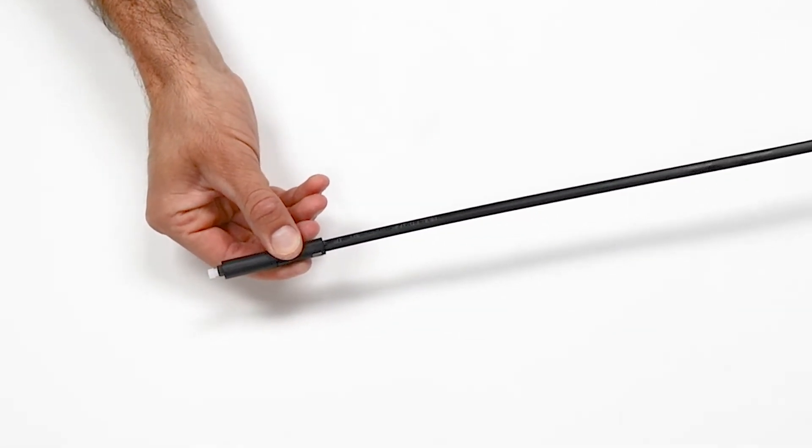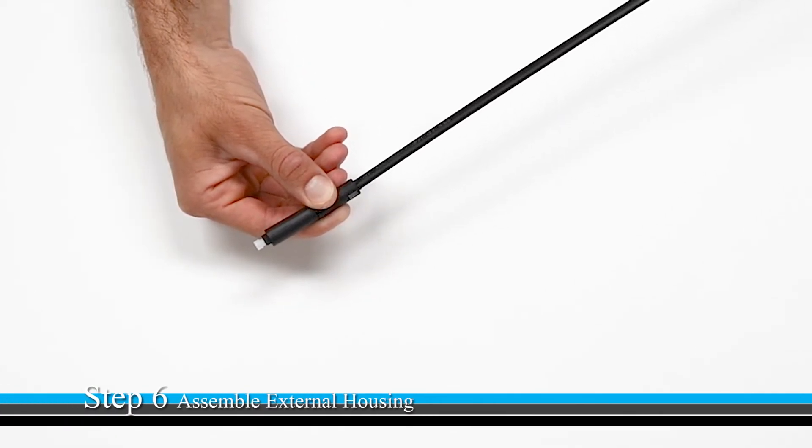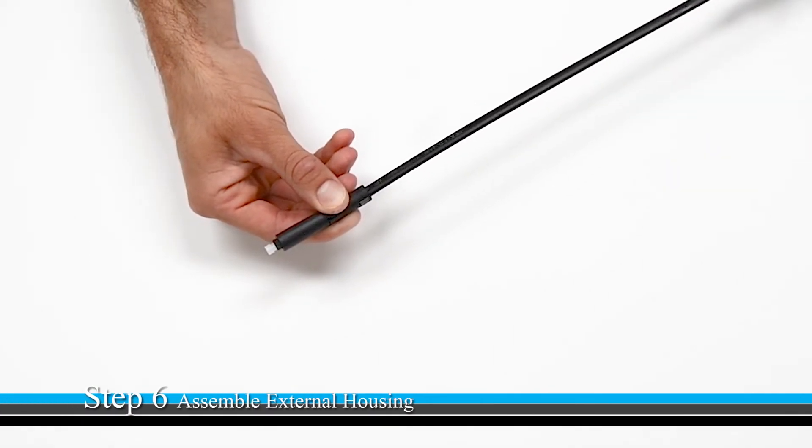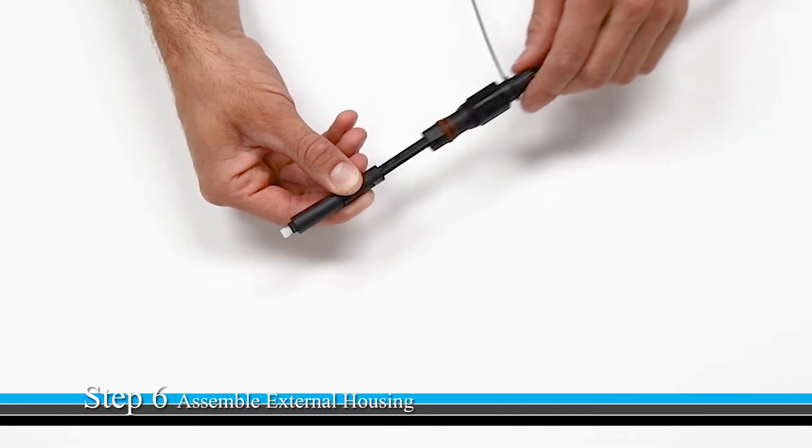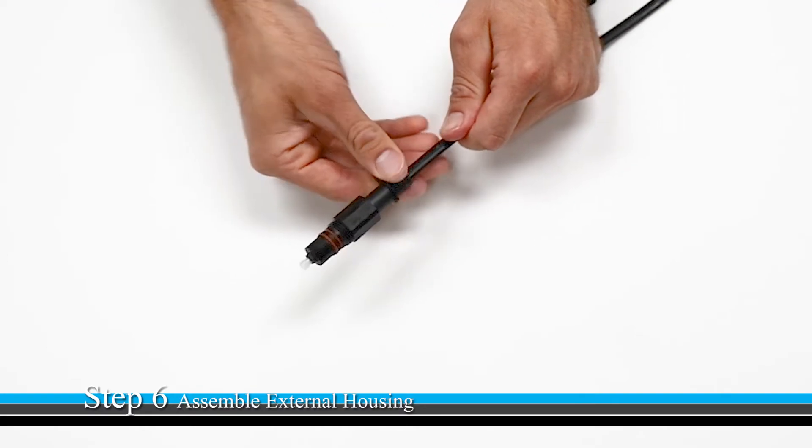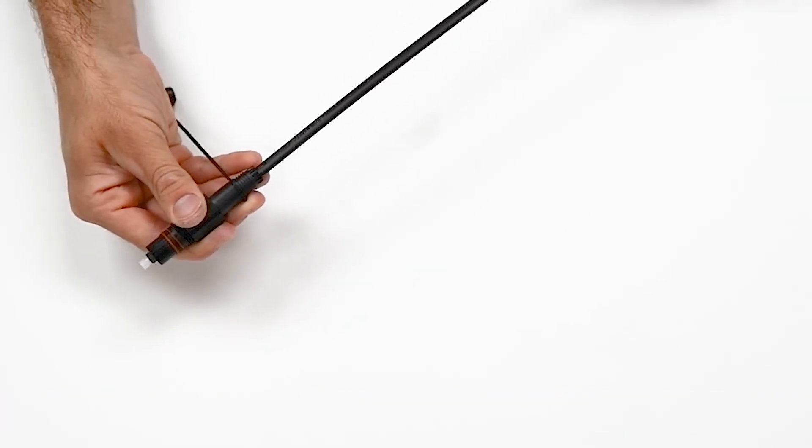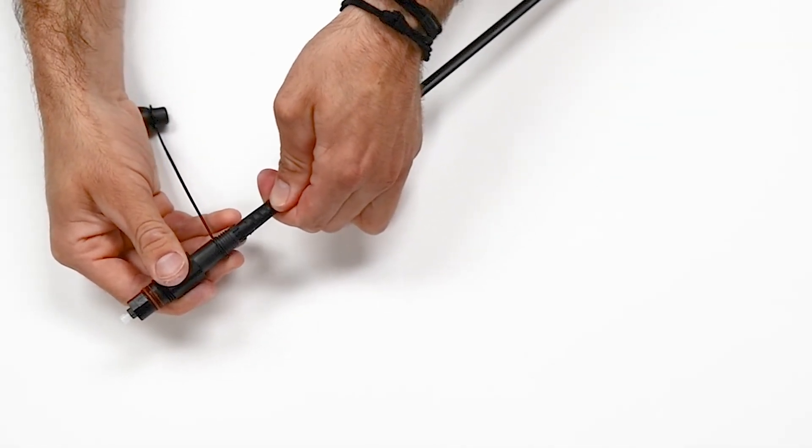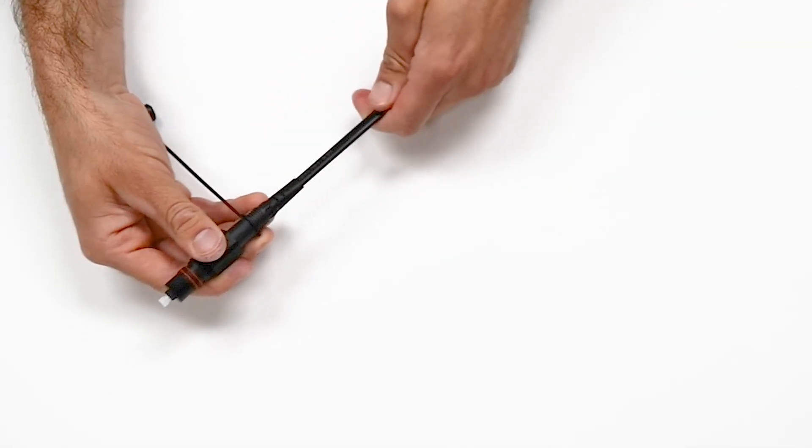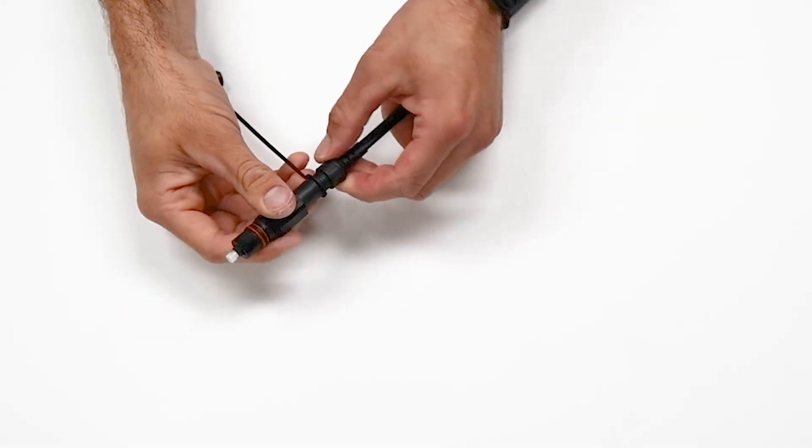Once the internal housing is complete, you want to slide the external housing up to the base of the cable. At this point in the process, you want to be sure to align the external housing assembly arrow with the inner collar groove. You will feel it snap into place. Slide the compression boot underneath the teeth on the bottom of the external housing. Slide up the connector nut and tighten it down.